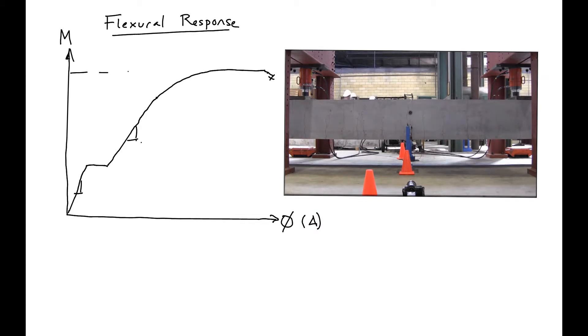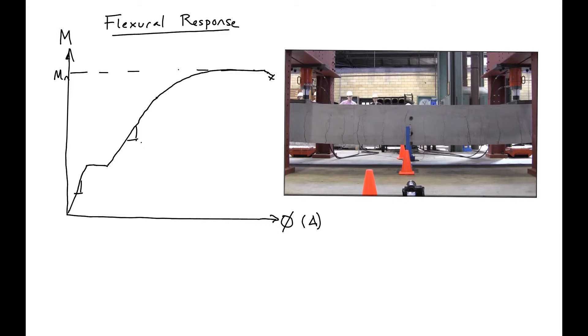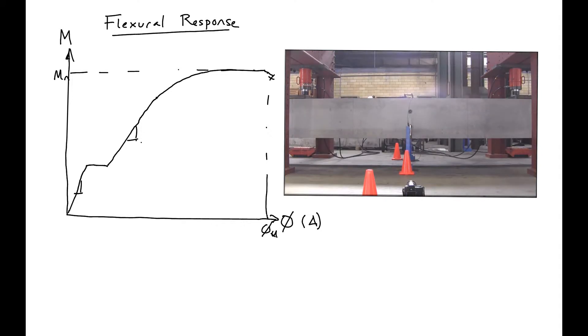So what you can see is we'll have a nominal capacity and we'll have a couple different curvature values, including the ultimate curvature.